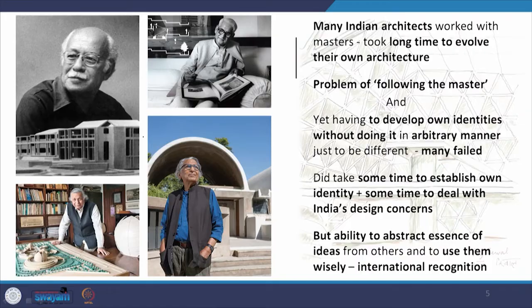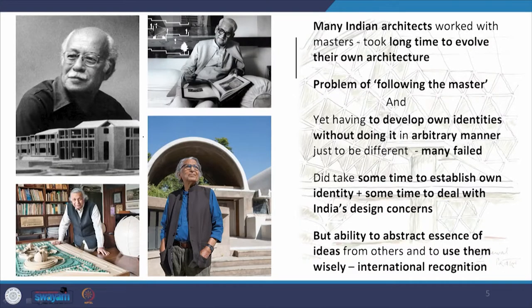There were others who brought about change with a very solid foundation of concept and reason behind it. It did take some time for them to establish their own identity and deal with the concerns of a growing young India. But the ability to abstract the essence of ideas — particularly from the West and from modernism — and use them wisely, combined with drawing the essence of traditional vernacular architecture and interpreting it for a new period, brought them international recognition. People like B.V. Doshi, Joseph Allen Stein, Charles Correa, and Raj Rewal, to name a few.